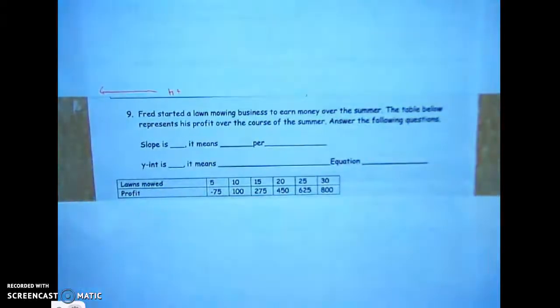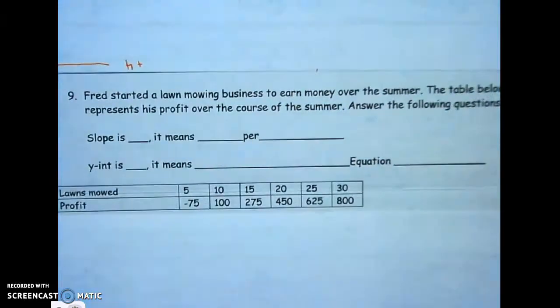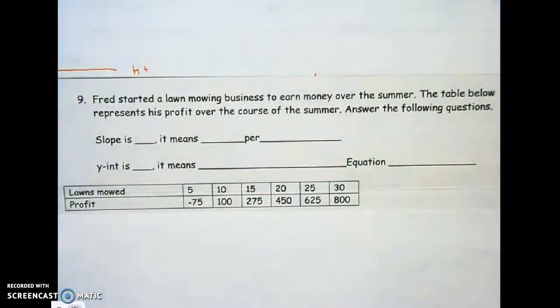All right, let's do some math. Let's read this one right here on number nine and fill it in. Fred started a lawn mowing business to earn money over the summer. The table below represents his profit over the course of the summer. Answer the following questions.